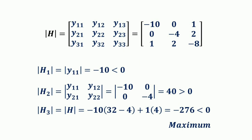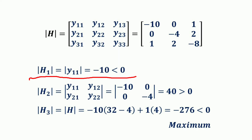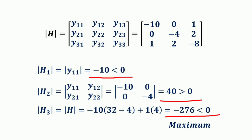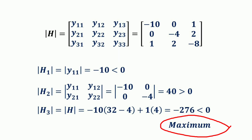Finally, we apply the Hessian test by checking the sign of each principal minor. The first principal minor h1 = y11 = −10, which is less than 0. The second principal minor h2 = det([y11, y12; y21, y22]) = 40, which is greater than 0. The third principal minor h3 = −276, which is less than 0. Since the principal minors alternate in sign (negative, positive, negative), the given function is maximized at the critical values.